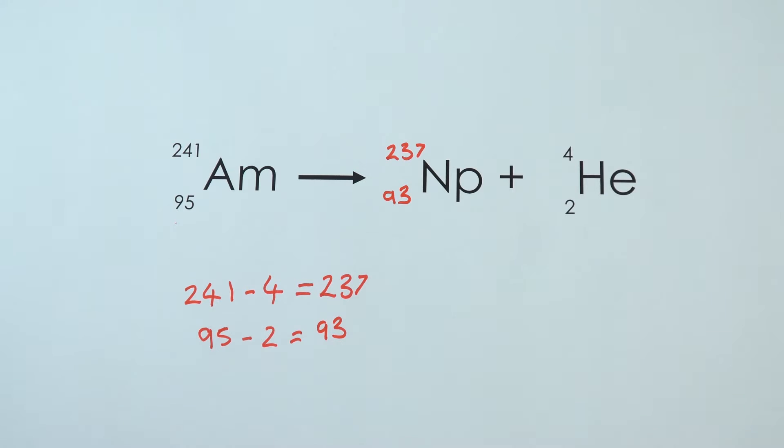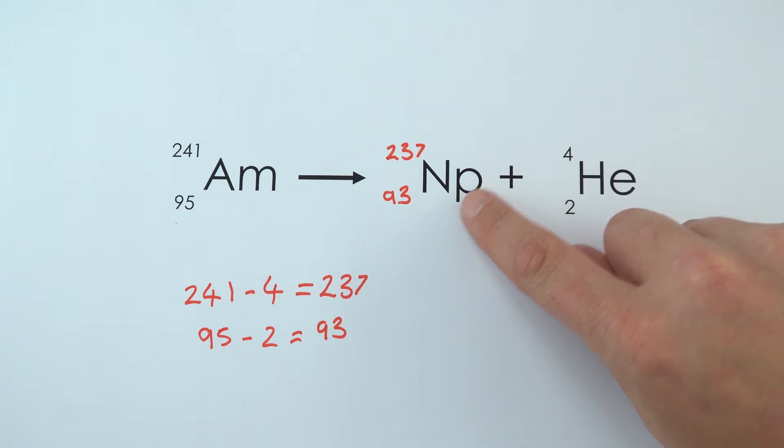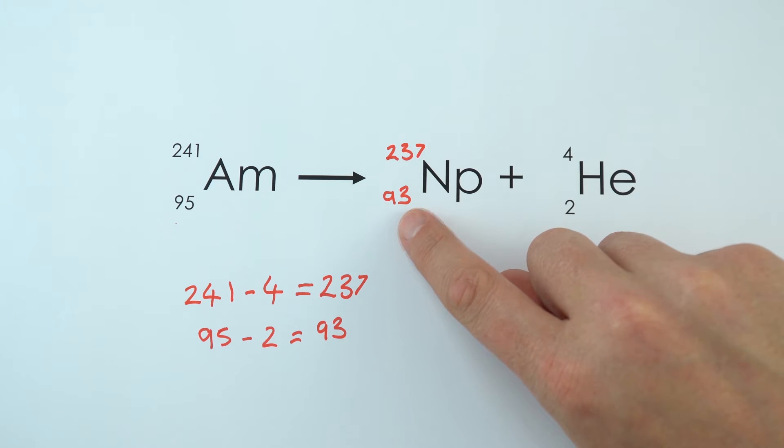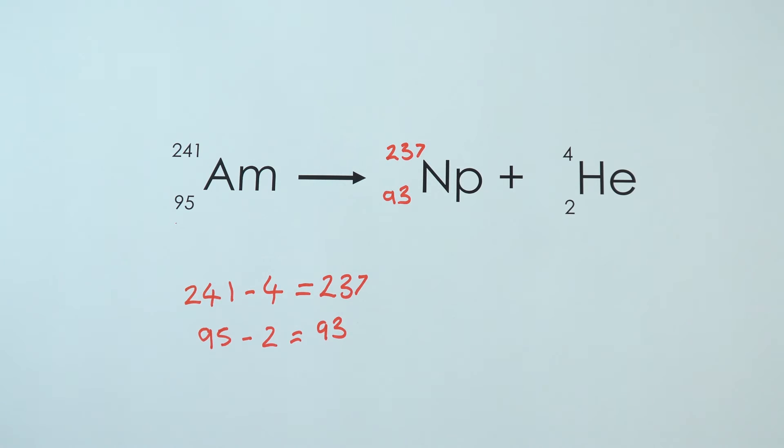Often when you get questions like this, you don't have to know which element it's going to be, but you have to be able to do some very simple sums—just taking off 2 and 4, really. You don't have to know what element 93 needs to be. It's often filling in the gaps on one of these decay equations.